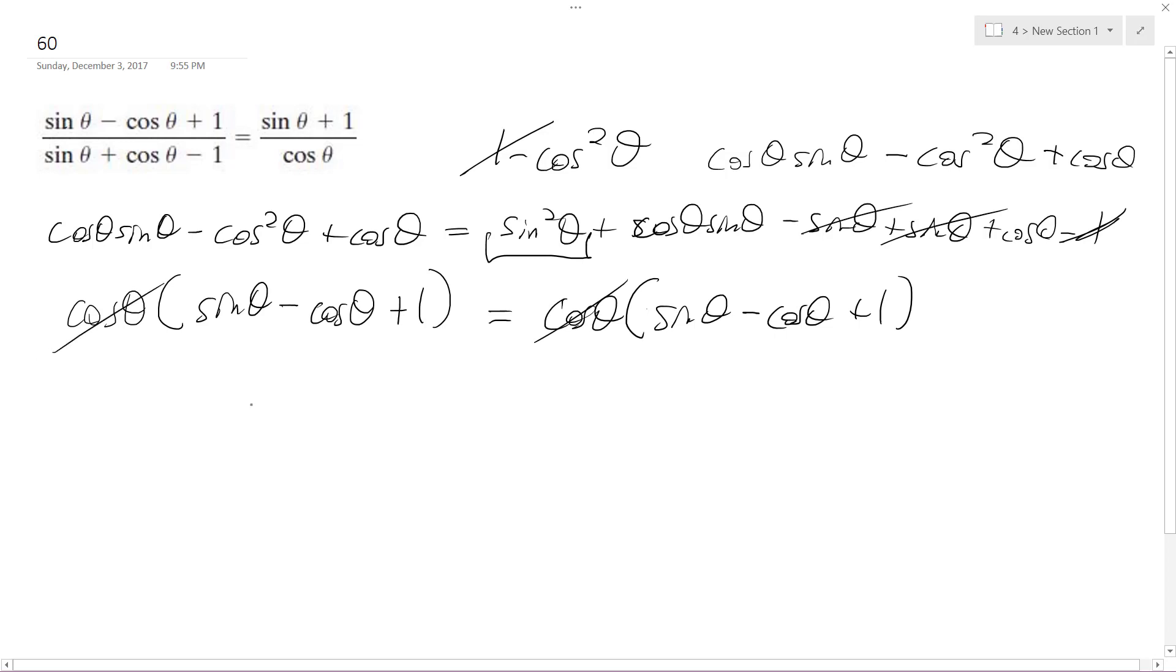Cosines cancel out, and we're just left with sine theta, minus cosine theta, plus one, equals sine theta, minus cosine theta, plus one. And that's it.